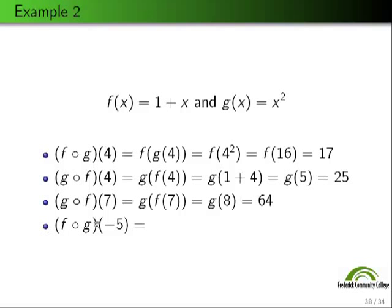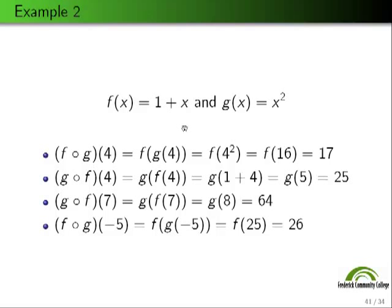Finally, f∘g(-5): we plug g(-5) into f. g(-5) = (-5)² = 25, so we have f(25). f adds 1 to the input, so f(25) = 26. Therefore f∘g(-5) = 26. That concludes this video lesson on the composition of functions. Thank you.